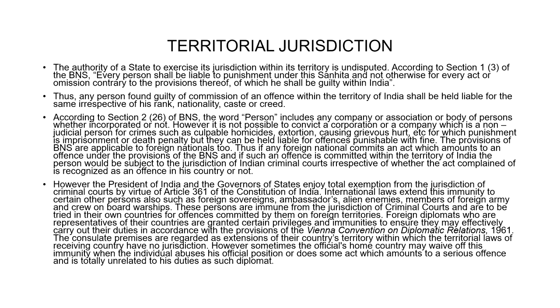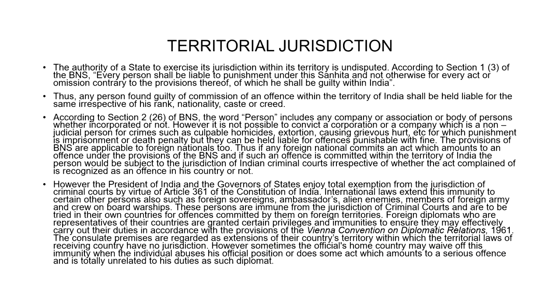How can you convict a company for murdering a person? When we talk about crimes such as culpable homicide, extortion or causing grievous hurt, for which punishment is imprisonment or death penalty, they cannot be convicted. But they can be held liable for offences punishable with fine. Because you can impose liability of fine upon a company, you can penalize them — but how can that penalty be given in the form of fine? You cannot imprison the company as it is.